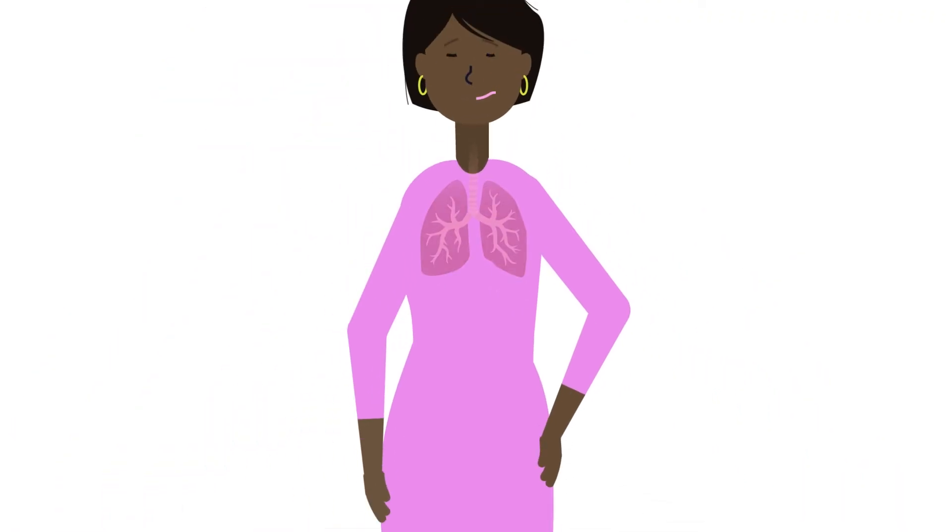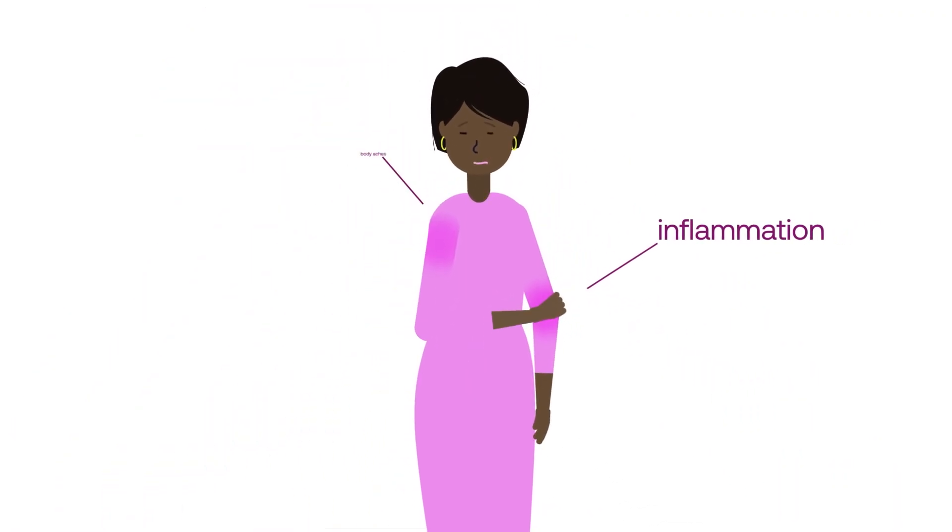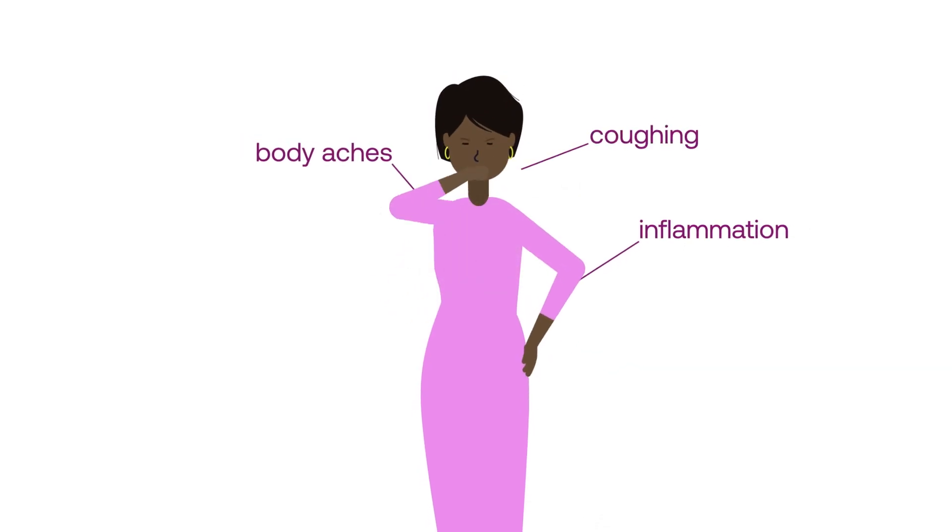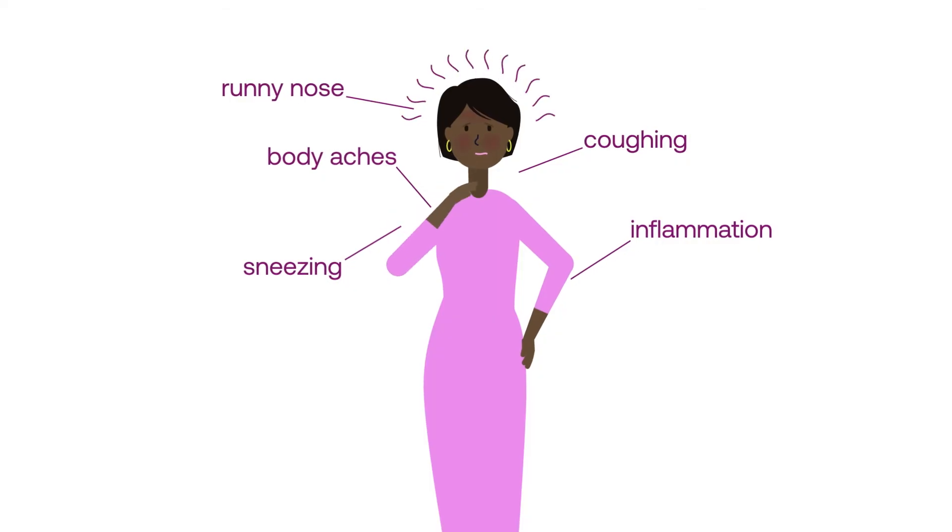A byproduct of this counter-attack is that cytokines cause inflammation in your limbs, resulting in body aches, in your airways, resulting in coughing, sneezing, or a runny nose, and raising your body's temperature, resulting in a fever.